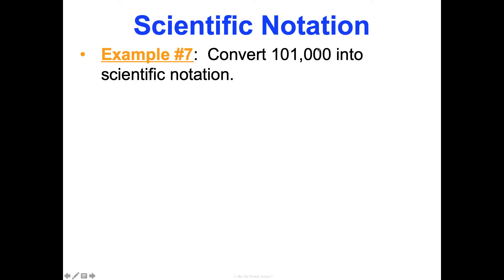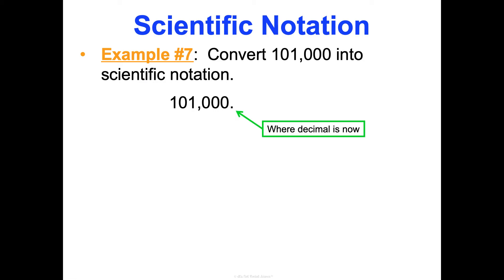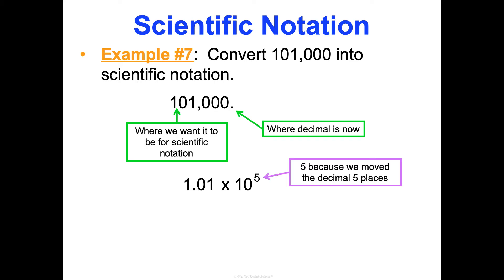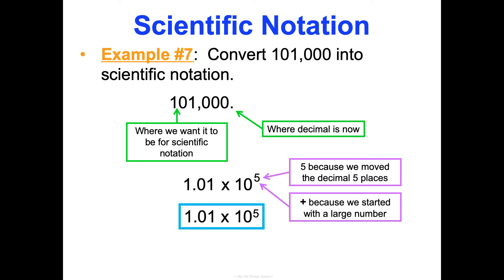Let's convert 101,000 into scientific notation. The decimal is at the end of the number. We want it to read 1.01, then times 10, with an exponent for how many places we move the decimal: one, two, three, four, five. It's positive because we started with a really big number. Final answer: 1.01 × 10⁵. Note this has three sig figs — just like the starting number, which had three sig figs, since none of the trailing zeros are significant.